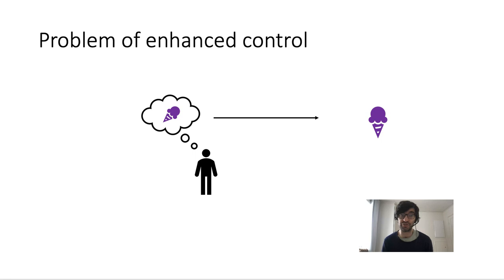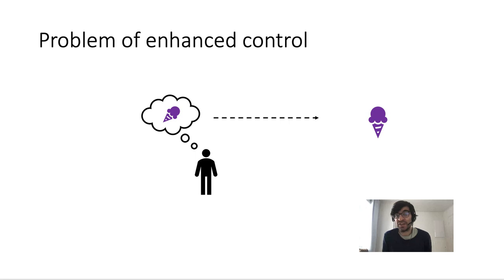That's the problem of luck. The second related problem is the problem of enhanced control, which arises as follows. Libertarians think that free will is incompatible with determinism — that any agent whose decision is determined by prior circumstances thereby lacks the kind of control required for free will. Libertarians also think that to have the required control, indeterminism must be true. But the problem is that once you take away determinism and replace it with indeterminism, agents seem to have even less control. If determinism is true, your prior mental states might fully determine your actions.